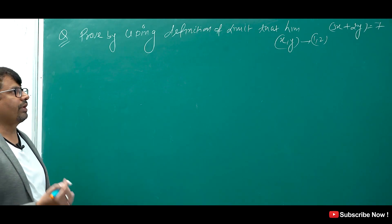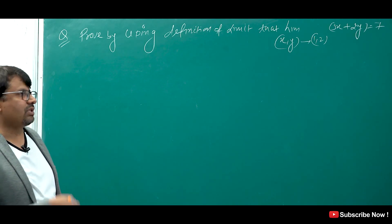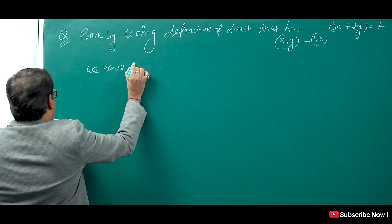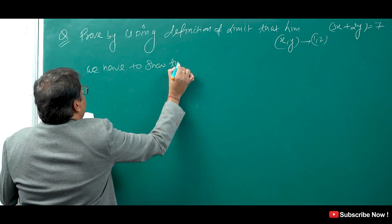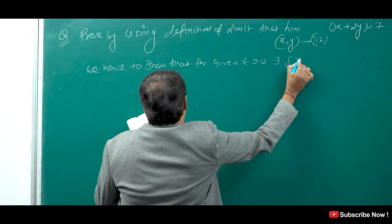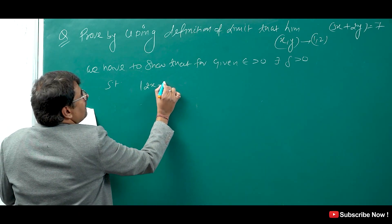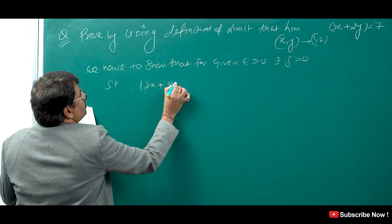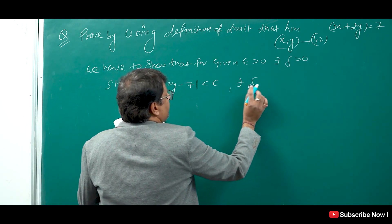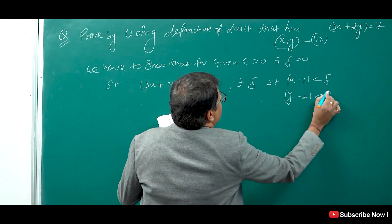Students, we have to show that for given epsilon greater than 0, there exists delta greater than 0 such that |3x + 2y − 7| < epsilon, whenever |x − 1| < delta and |y − 2| < delta.